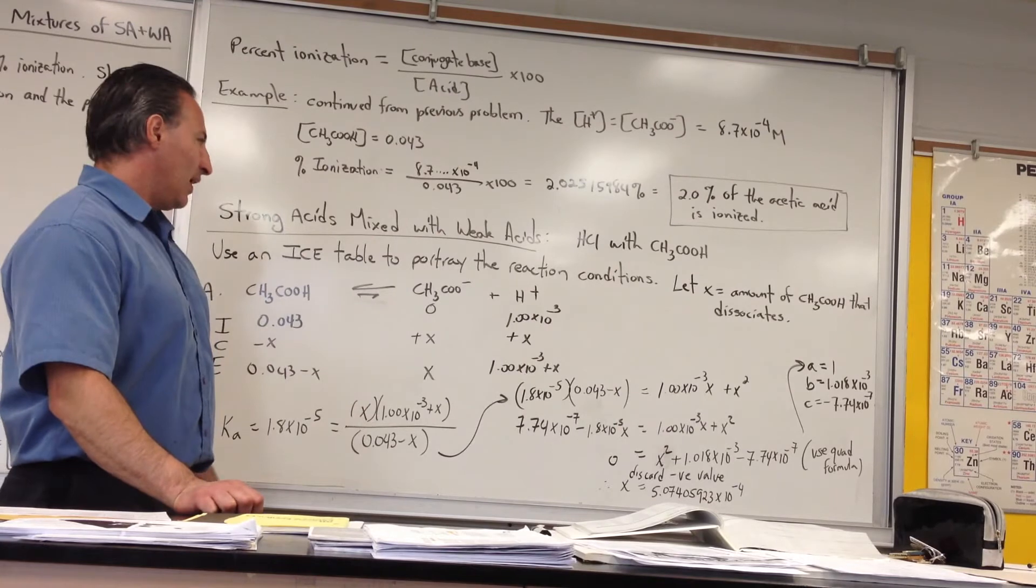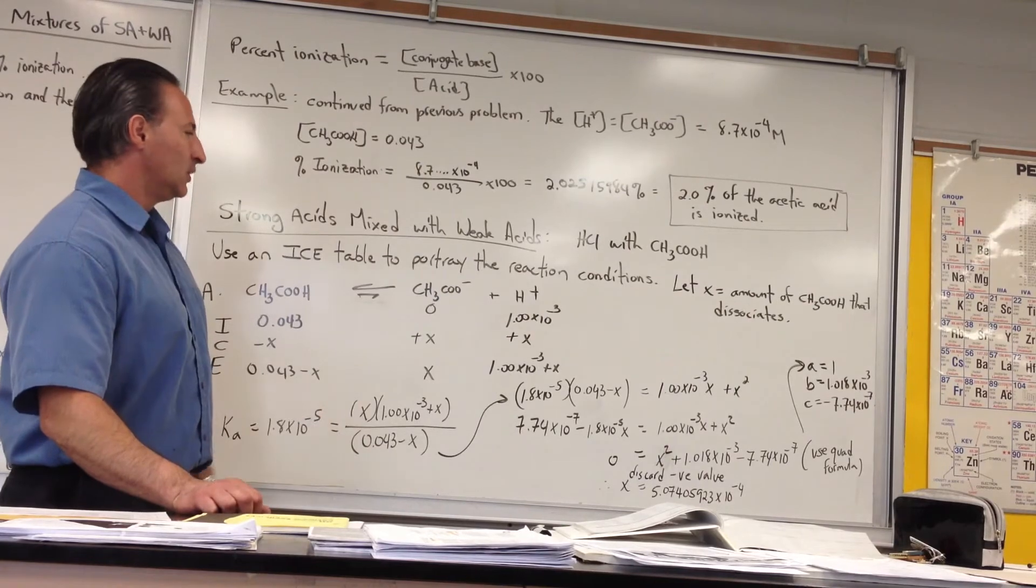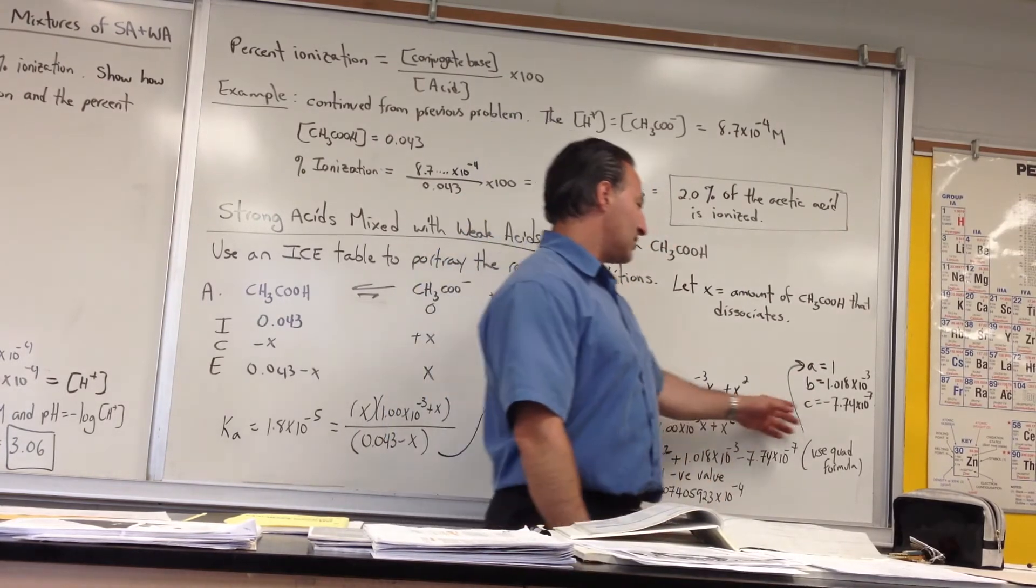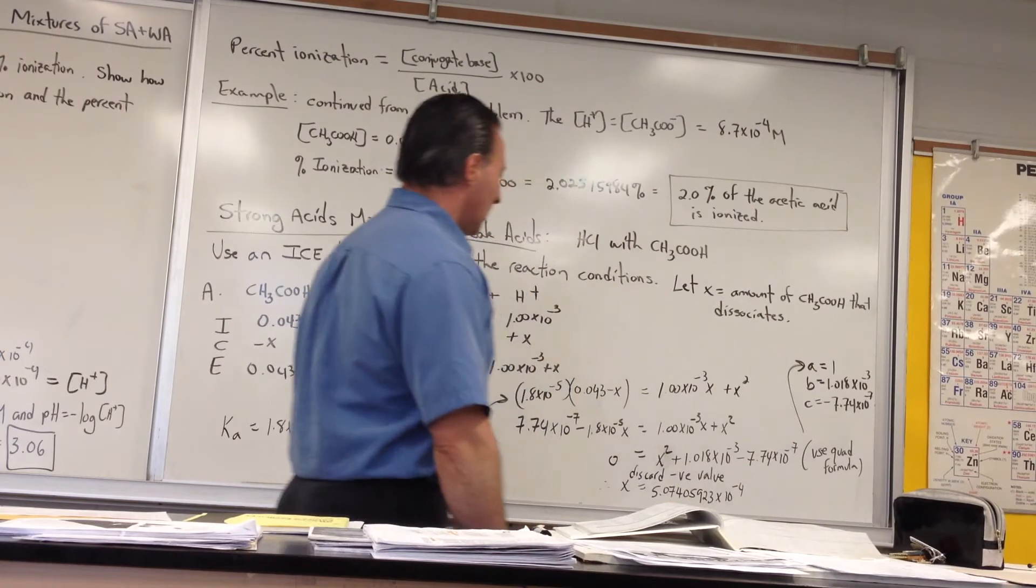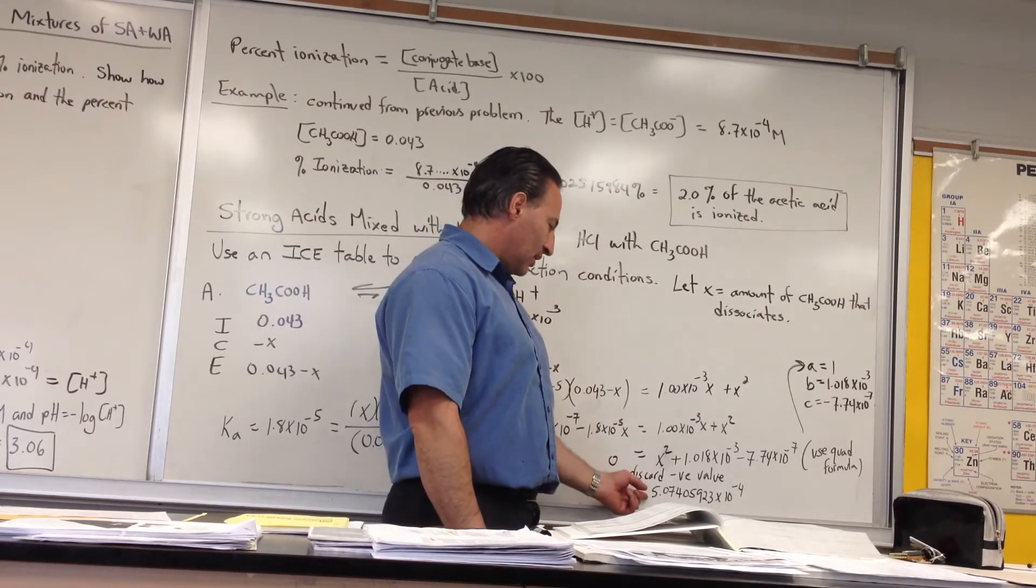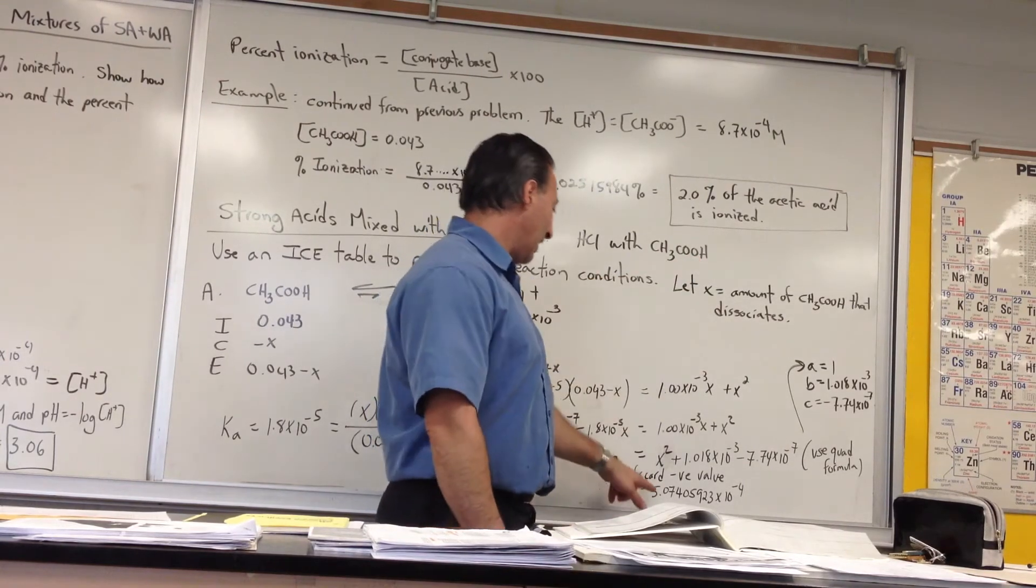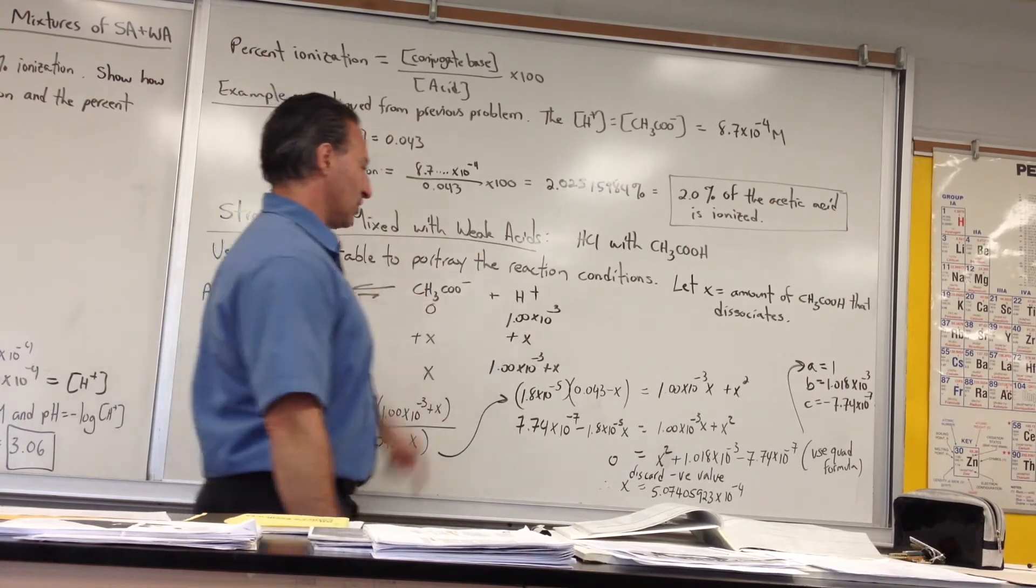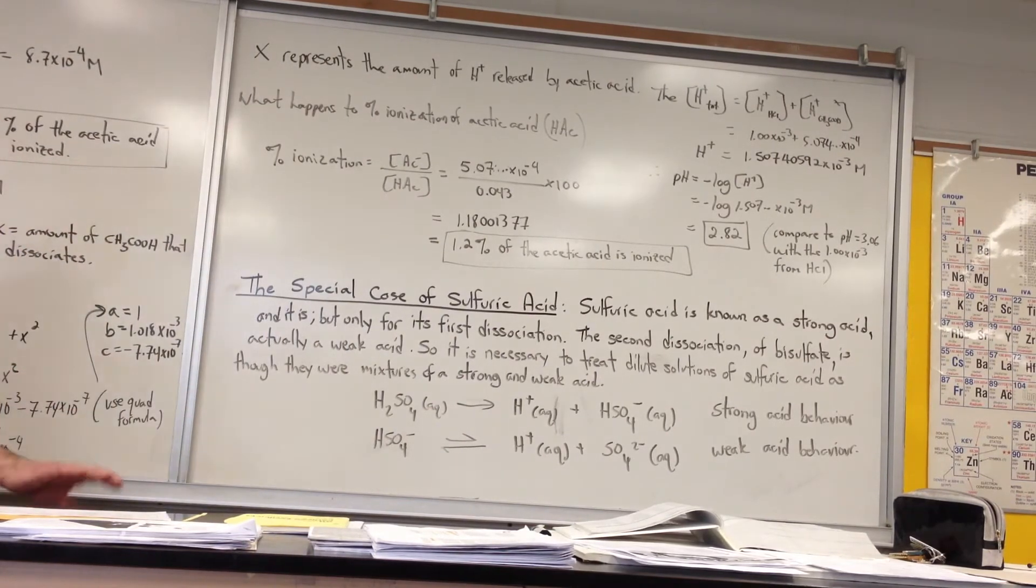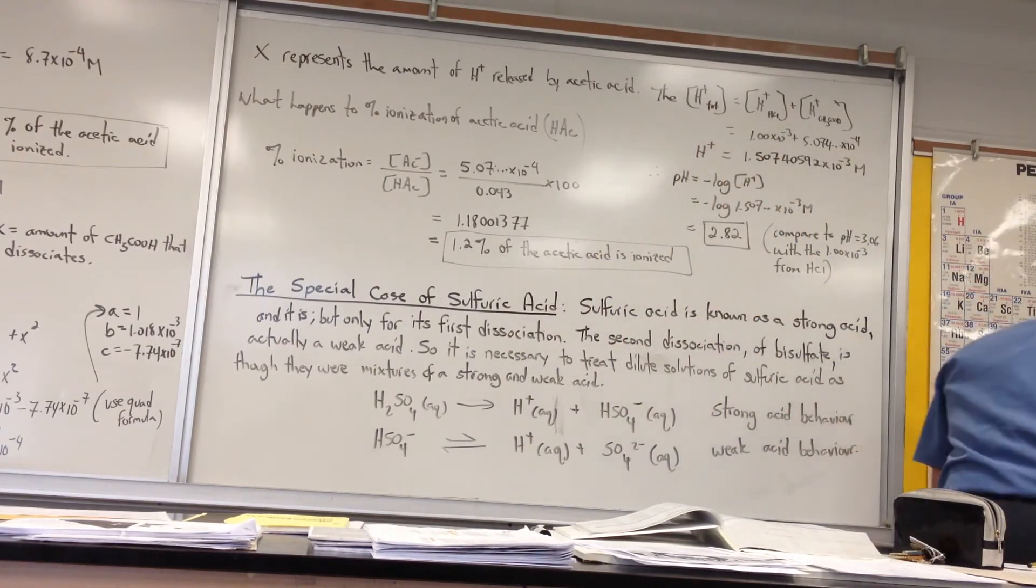We enter it into our equilibrium equation, and here it would be best to use the quadratic formula. So we enter the values where A equals 1, B equals 1.018×10⁻³, and C equals -7.74×10⁻⁷. You'll get two values from your calculator. One will be negative, which we discard. This is the value we keep - the amount of H⁺ that forms from dissociation of acetic acid, and we add that to the amount already in solution.